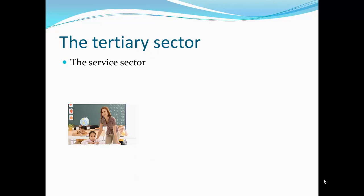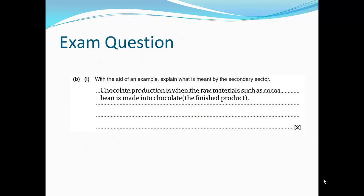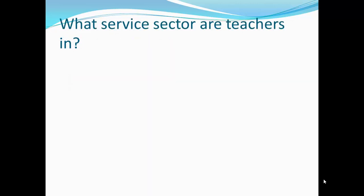They provide a service. Here is an exam question: explain with the aid of an example what is meant by the secondary sector. I said chocolate production is when raw materials such as cocoa beans are made into chocolate, the finished product. I incorporated the answer into my example — the raw material is made into the finished product which is the chocolate. Another simple question: what sector are teachers in? The answer is the tertiary sector.